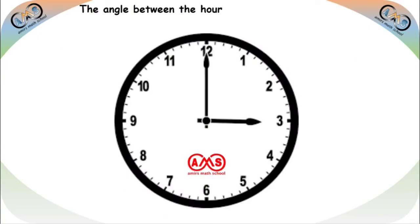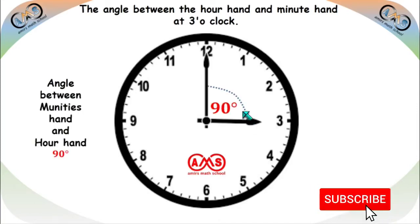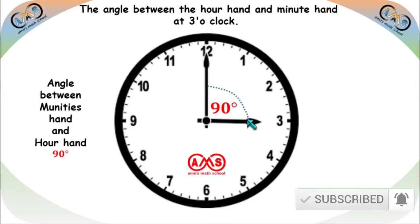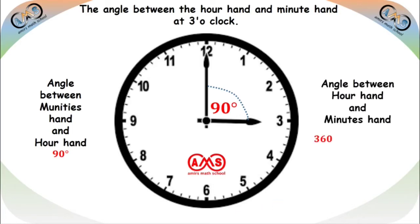The angle between the hour hand and the minute hand at 3 o'clock. This is the analog clock, this is the hour hand, this is the minute hand. So at 3 o'clock, the angle between the minute hand and the hour hand is 90 degrees. If we count it clockwise, that is minute hand to hour hand. If we count it anticlockwise, that is hour hand to minute hand. There is another angle formed. The angle between the hour hand and the minute hand is 360 minus 90, which is 270 degrees.